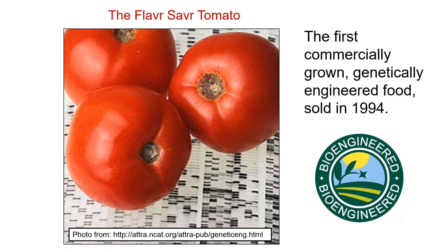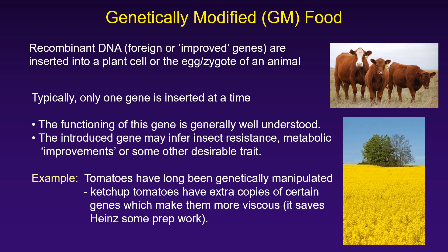Certain strains of tomatoes were among the very first crop plants approved for public consumption — for example, the Flavr Savr tomato, modified to be juicier and more flavorful. Another well-known example is a GMO produced by Heinz: they wanted their ketchup very thick with minimal prep work. They identified a glycoprotein that allowed tomato juices to gel and introduced extra copies of that gene into the zygote — they didn't introduce something brand new, just made multiple copies of an existing gene. The plant now produces more of that glycoprotein, so its juices naturally congeal more and give you thicker ketchup.